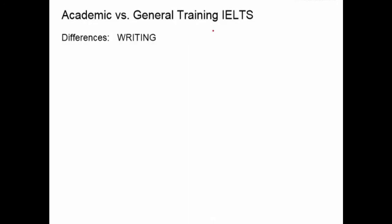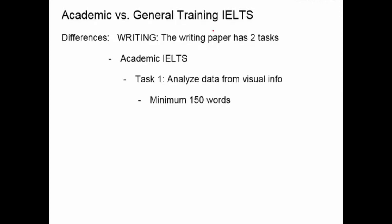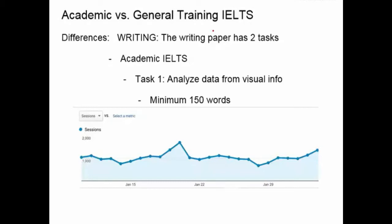Further differences are in the writing section. The writing paper has two tasks for both the academic and the general training IELTS, but the tasks are different. In the academic IELTS, for your first task you will analyze data from visual information and write a report. The visual information is usually something like a chart or graph, and you need to summarize the important information and provide some type of analysis.